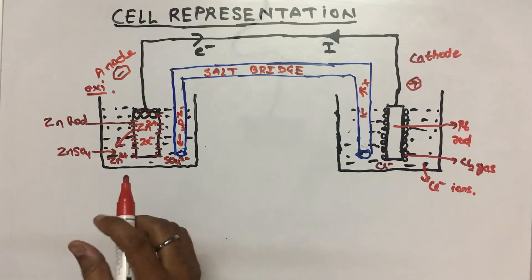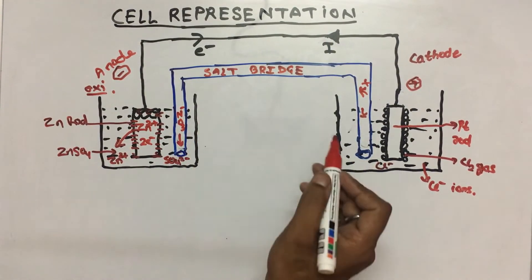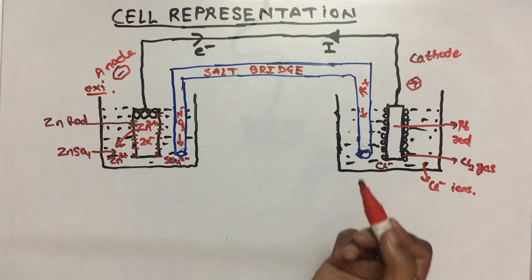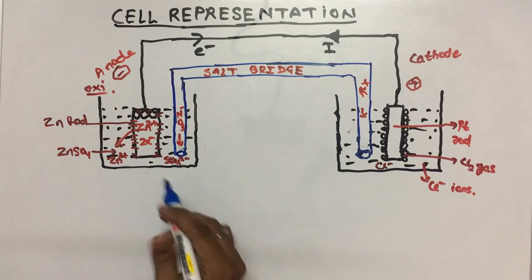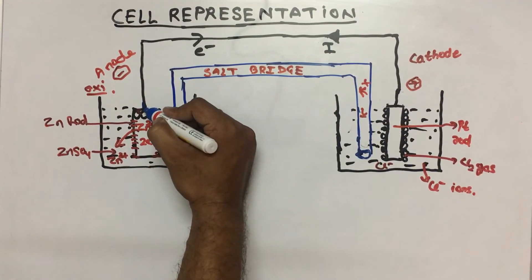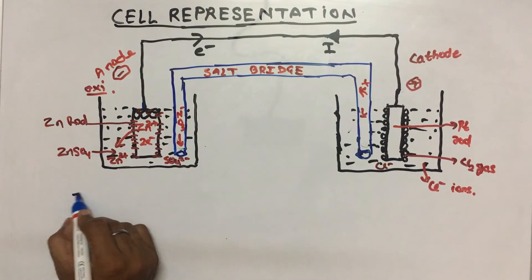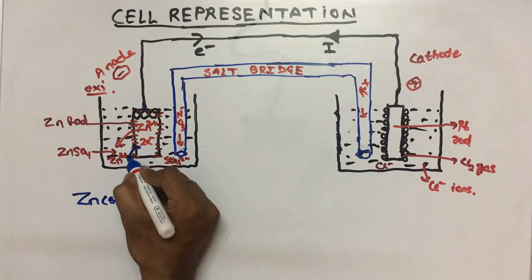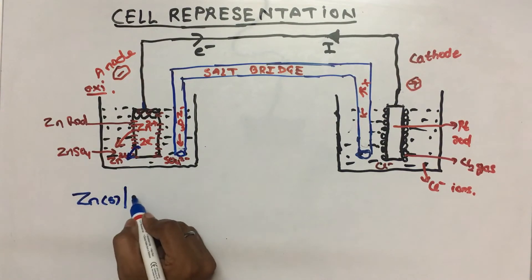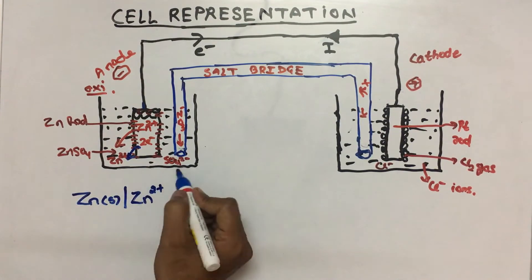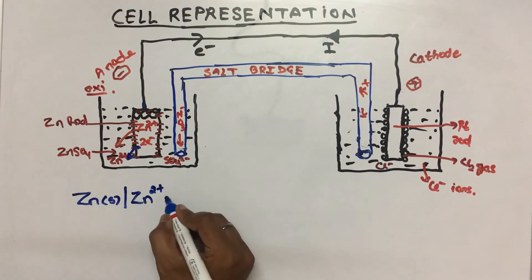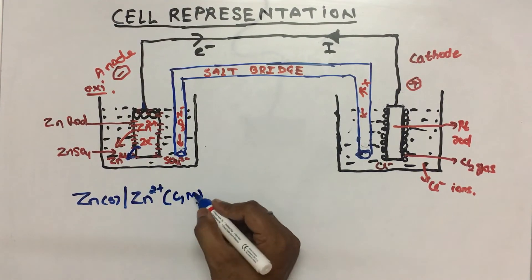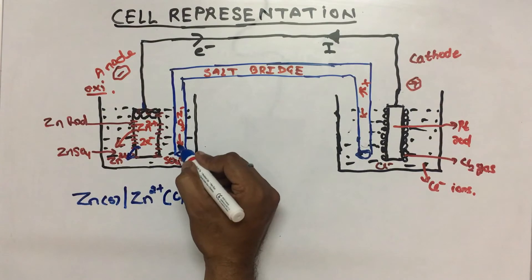If we do a cell representation, the convention is: we start from the anode. So you write it from the anode. As you come to the solution, you get Zn2+ ions in the solution, so you write Zn2+ ions. Sulfate ions are present but we are only concerned with the metal being oxidized or reduced. Whatever the concentration is, you write it in brackets — suppose the concentration is C1 molar.